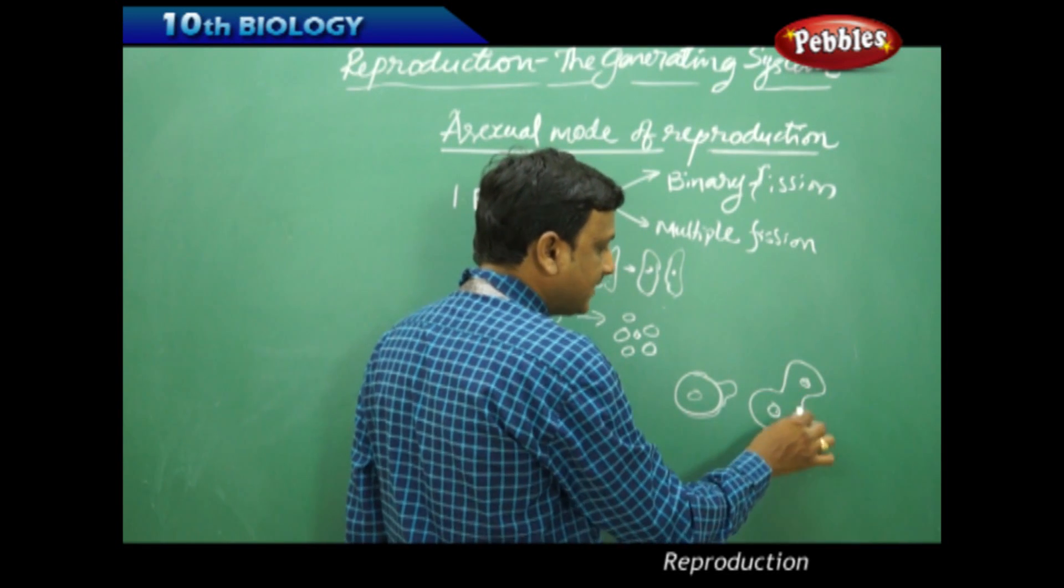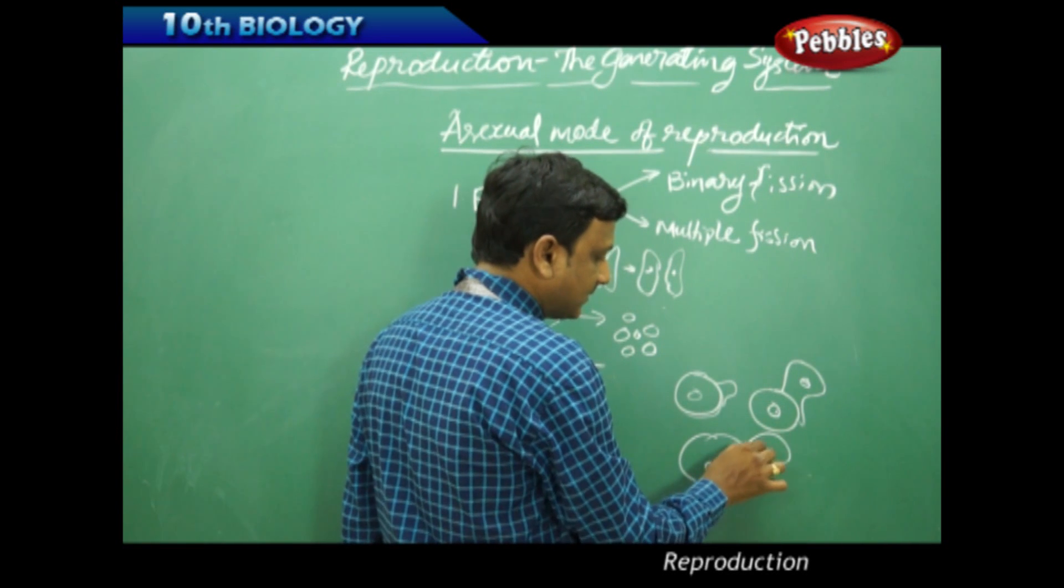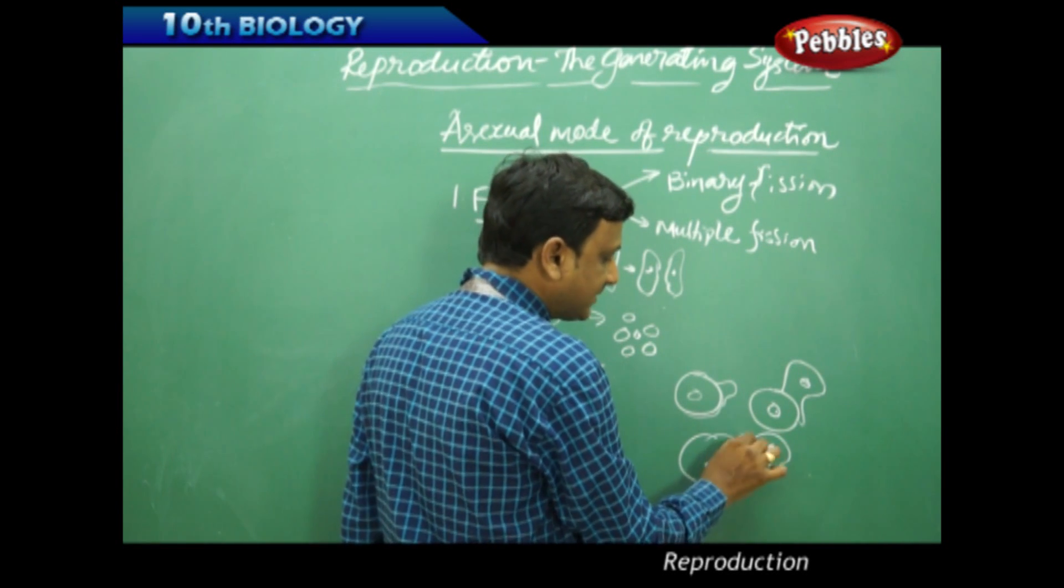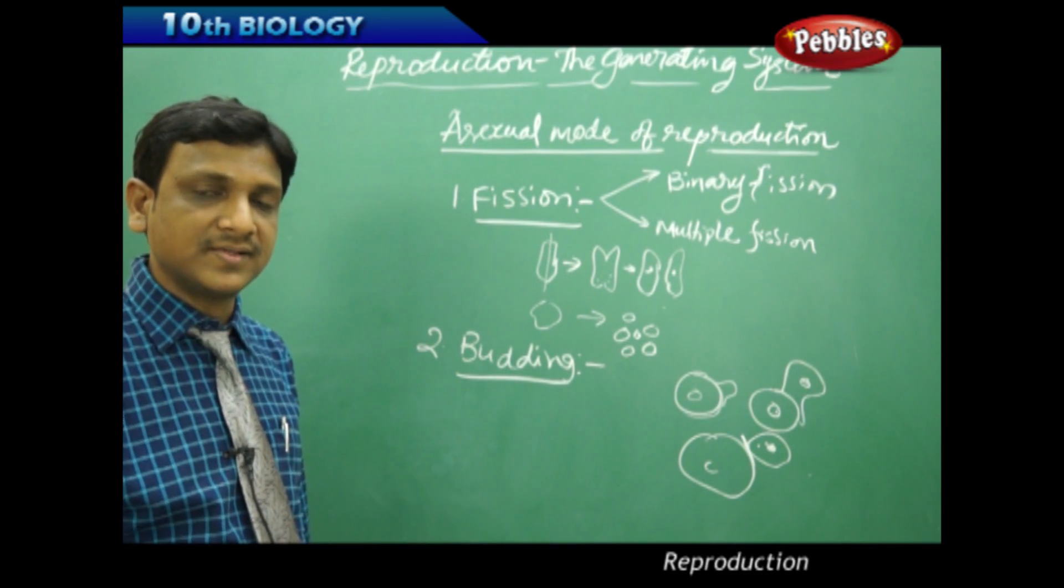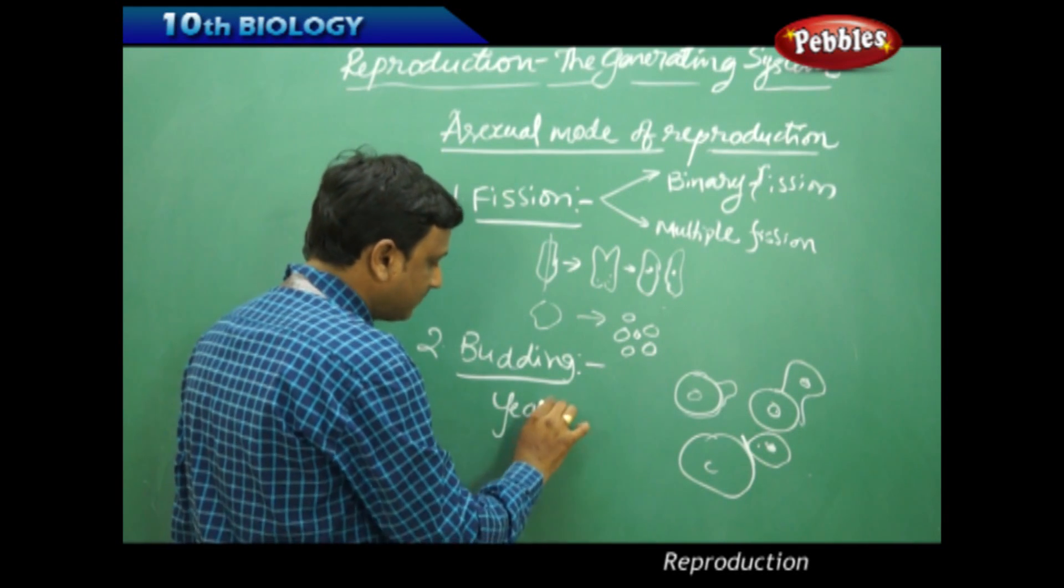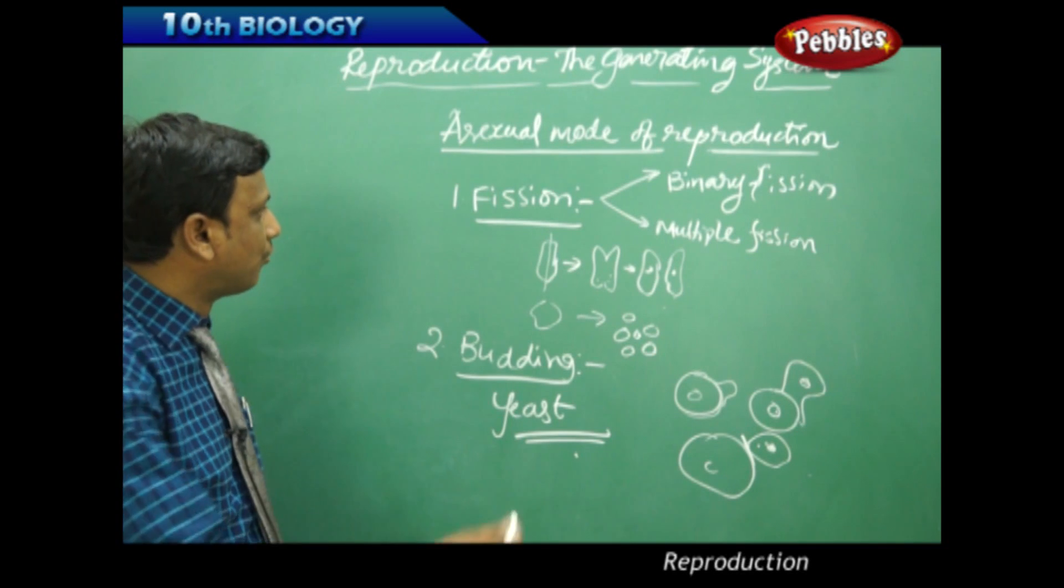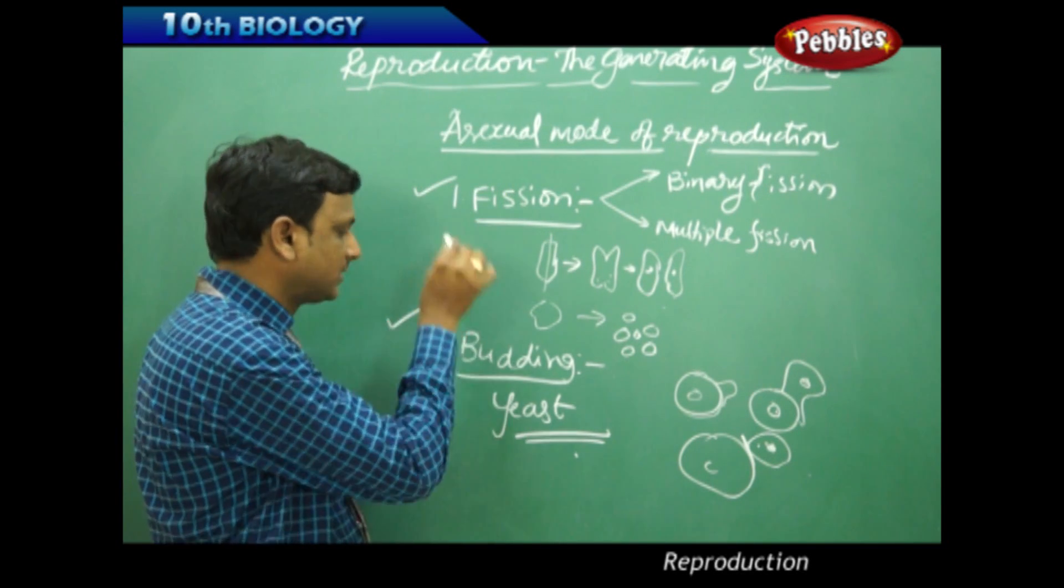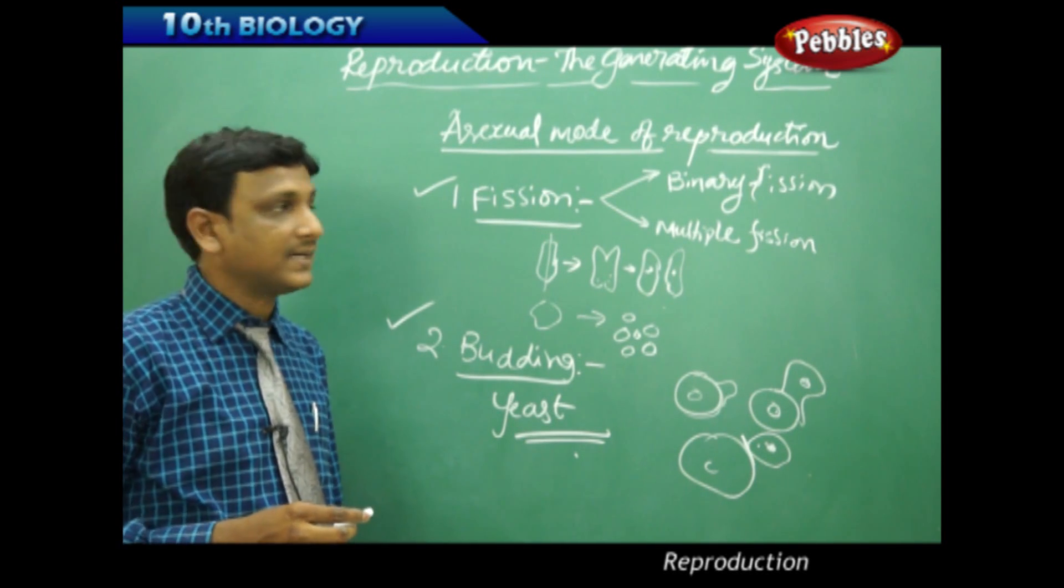The bulge or protrusion grows up in size and takes a part of the nucleus. Finally, the bud gets completely developed into a new yeast and gets detached from the parent, leading an individual life. This is called budding, which is observed in the organism yeast. Fission is one of the asexual modes of reproduction, and budding is another type.